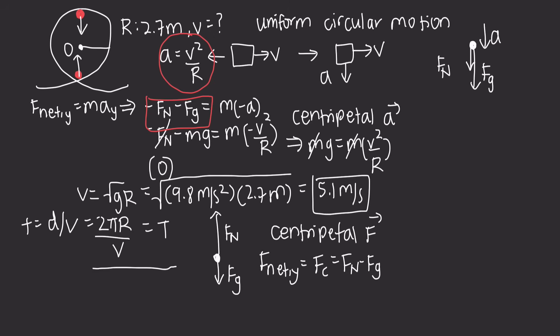That is an introduction to uniform circular motion and centripetal acceleration. In the next video, I'll be doing a proof of how we derived the relationship between acceleration and velocity, so stay tuned. Thank you, and I hope you've learned something new.